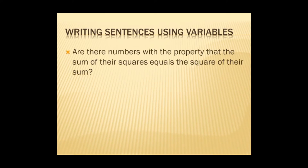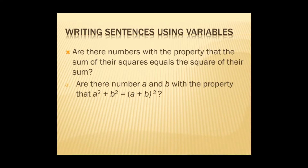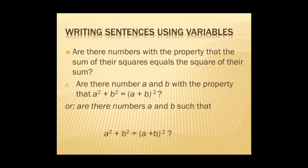Writing sentences using variables: Find numbers a and b with the property that the sum of the squares equals the square of the sum. Are there numbers a and b with the property that a squared plus b squared equals (a + b) squared? Or, are there numbers a and b such that a² + b² = (a + b)²?